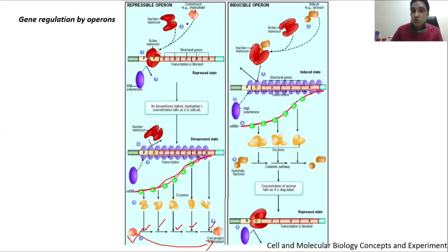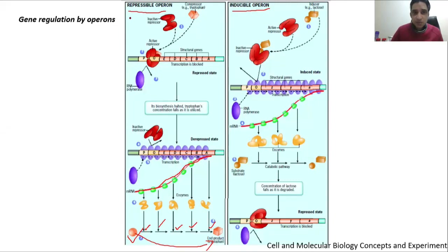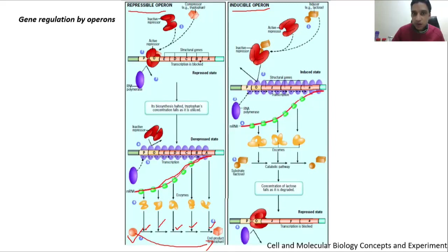There are two ways bacteria generally control an operon. The first is called a repressible operon, and the other is called an inducible operon. From the name, you might guess: a repressible operon controls expression by keeping it in a closed or repressed state. In the bacterial system, O stands for operator, P stands for promoter, and A, B, C, D, E are the five genes belonging to five enzymes required for biosynthesis.